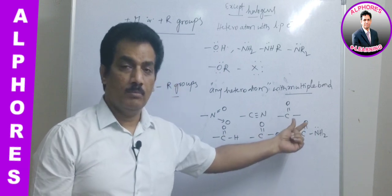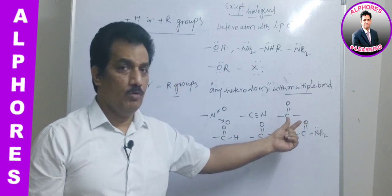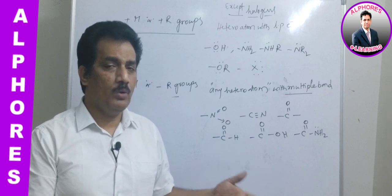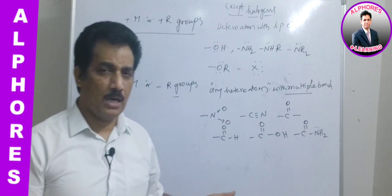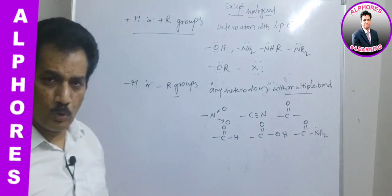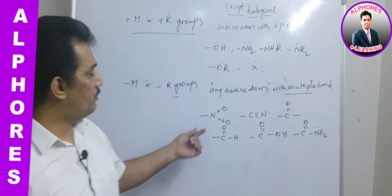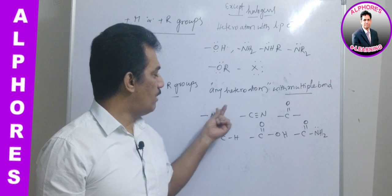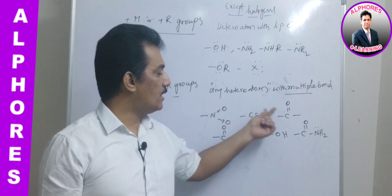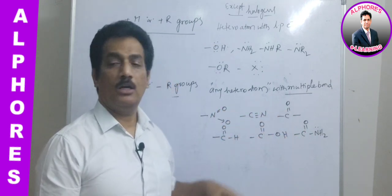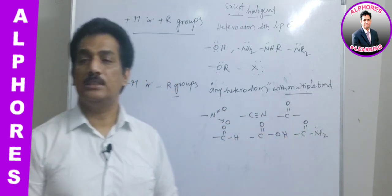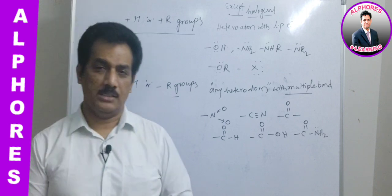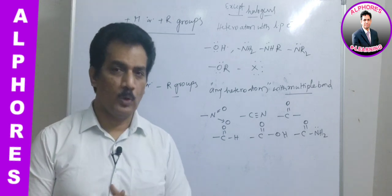To identify a minus R or minus M group: when the bonded atom has any heteroatom with a multiple bond, then automatically it is considered a minus R or minus M group.